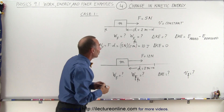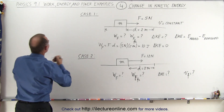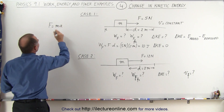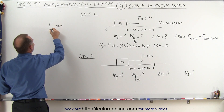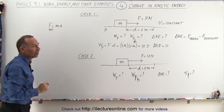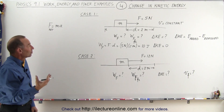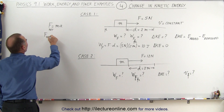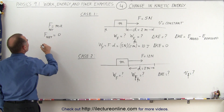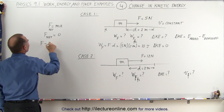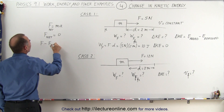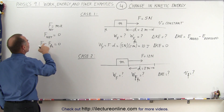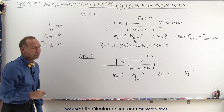How do we know that? Another way of looking at it is that the net force is equal to mass times acceleration. Since the acceleration is zero because the velocity is constant, the net force must equal zero. This means the applied force minus the friction force equals zero, so the magnitude of the friction force must equal the magnitude of the applied force — 5 newtons.